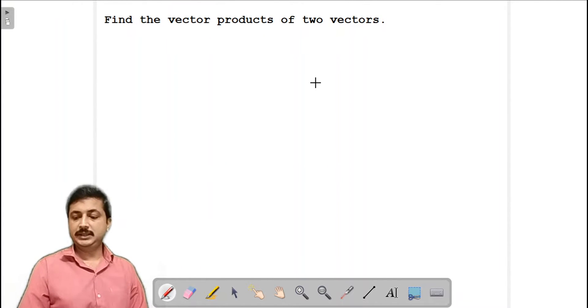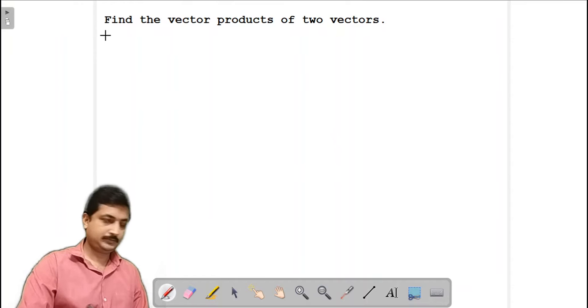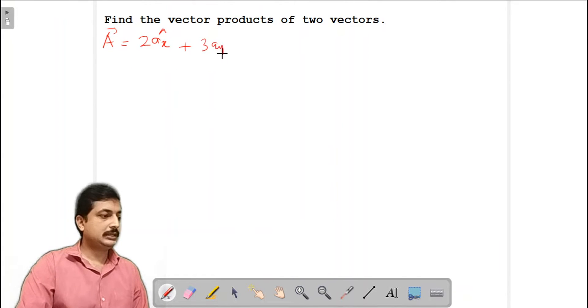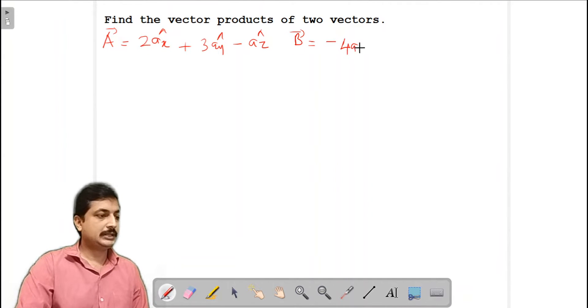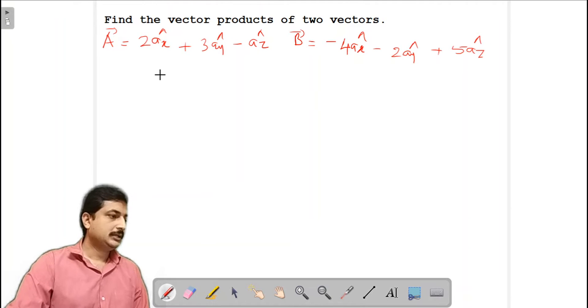Let A vector be 2ax cap plus 3ay cap minus az cap, and B vector be minus 4ax cap minus 2ay cap plus 5az cap. So you are asked to find the vector product or cross product between this vector and this vector.